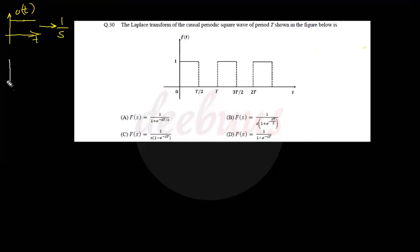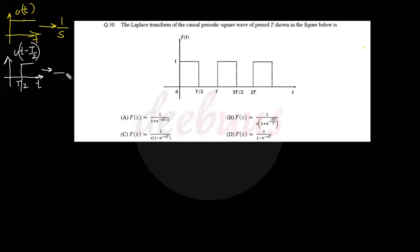Now we check what is the Laplace transform of u(t − T/2). Since the signal is u(t − T/2), its Laplace transform is 1/s multiplied by e raised to −sT/2.